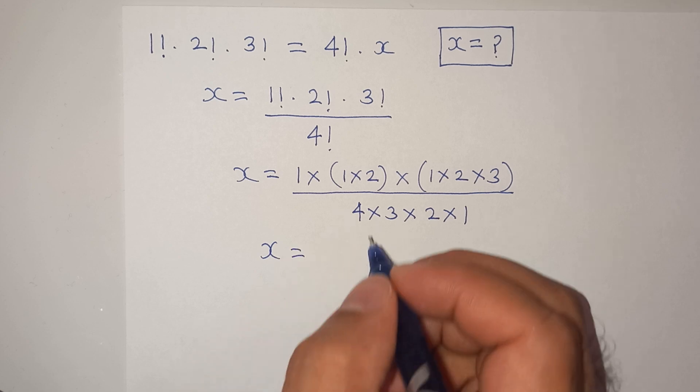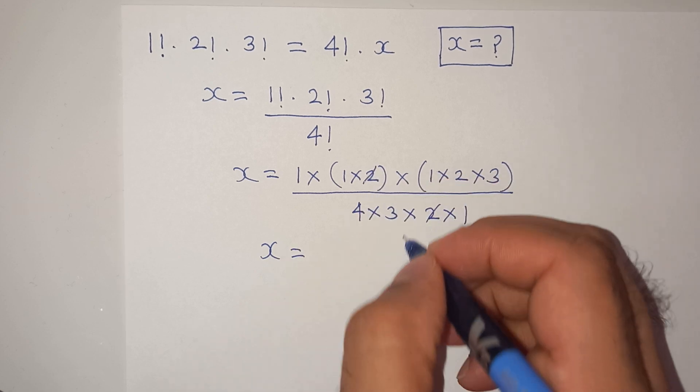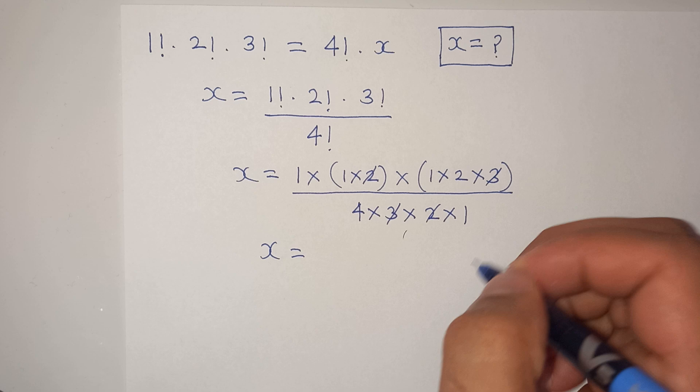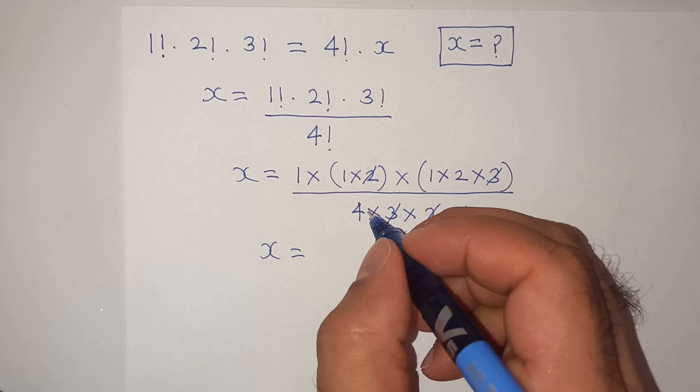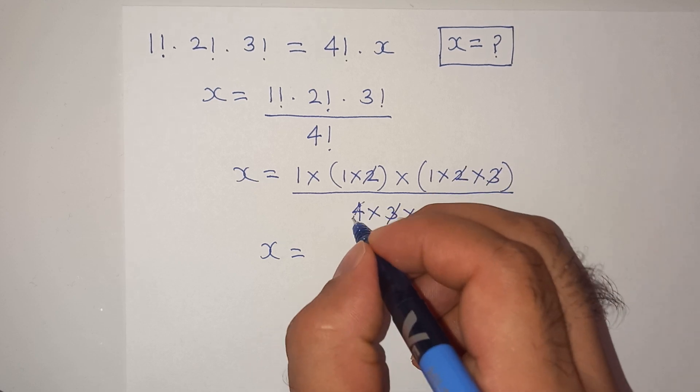So x equals to, this 2 and 2 will cancel, this 3 and 3 will cancel, this 4 can be divided by 2, so it will be 2.